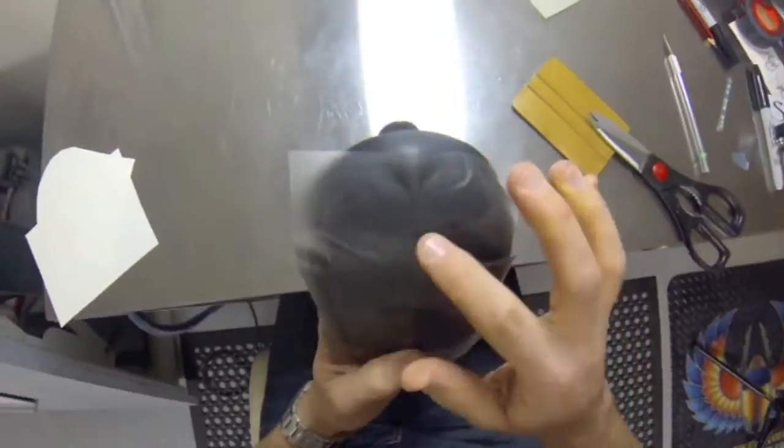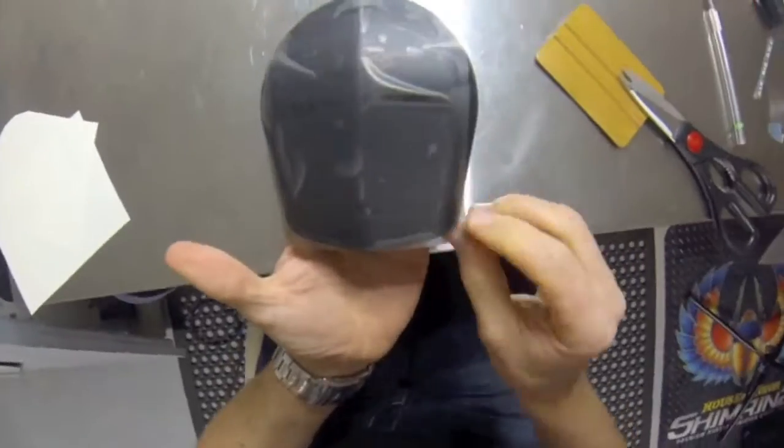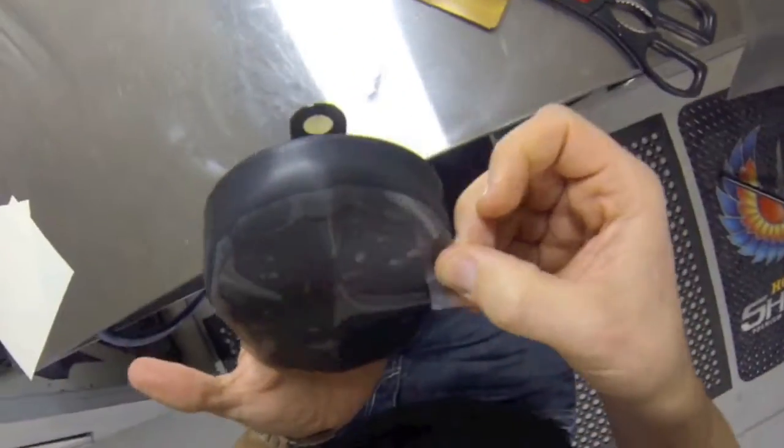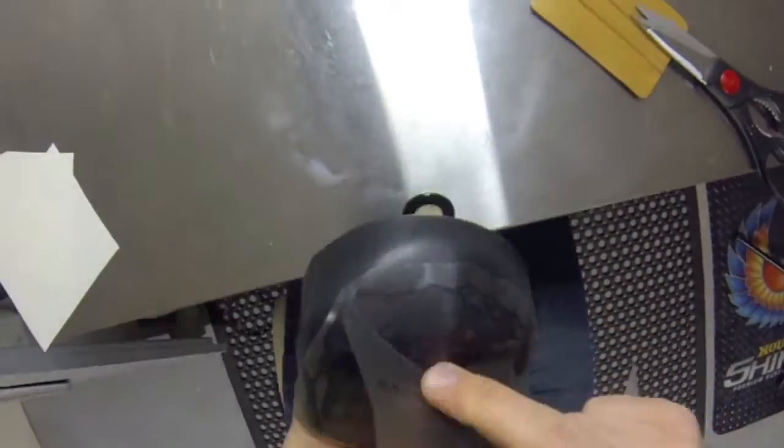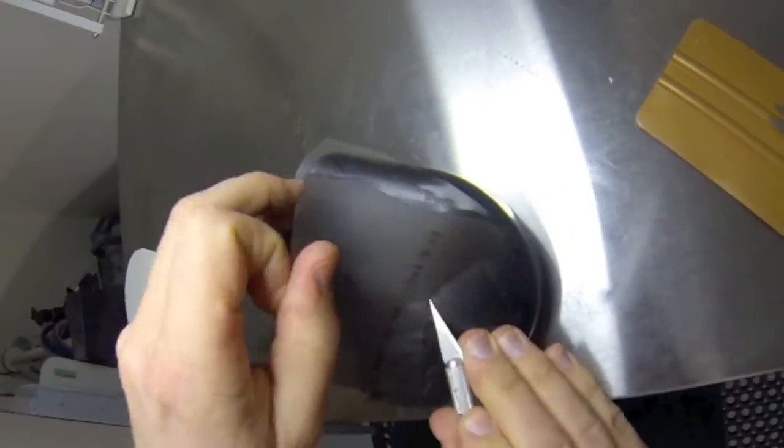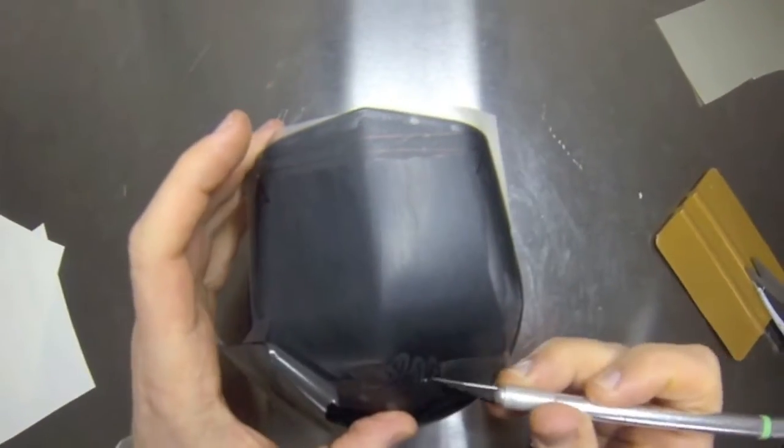Make sure it's all nice and smooth. If you need to, you can get a hairdryer and that will shape the vinyl a little bit more. Whenever you peel the application tape off, pull back on a 180 degrees and that way it's easier to remove.